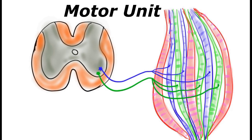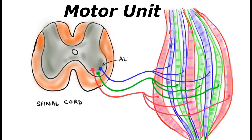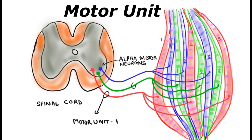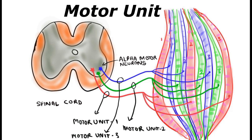One single alpha motor neuron supplying the number of muscle fibers in the skeletal muscle is known as a motor unit, and we have a number of motor units in one single muscle belly. In this illustration, I am showing only three motor units and their respective muscle fibers, and how they innervate with different colors in the extrafusal fibers, in other words, skeletal muscles.